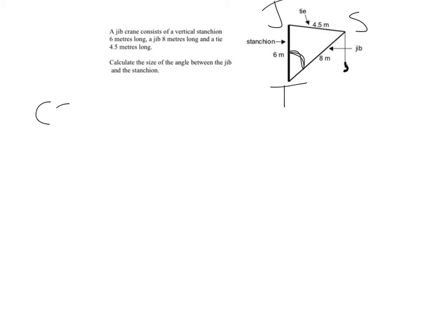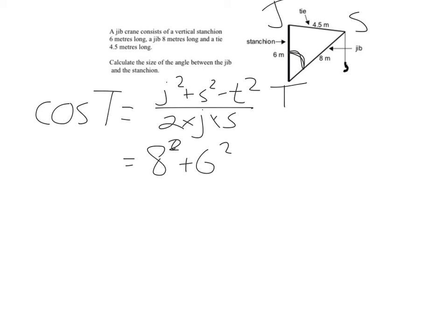So cos T is going to be j squared plus S squared minus T squared over 2 times J times S. And again, putting in all that information, I'm going to have 8 squared plus 6 squared minus 4.5 squared, all divided by 2 times 8 times 6, and making sure that I'm bracketing those top and bottom lines, and I get 0.83.